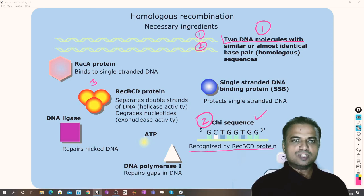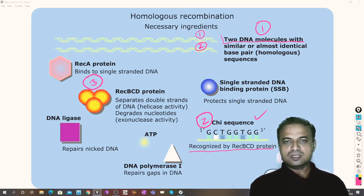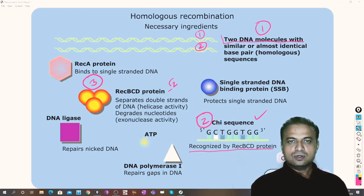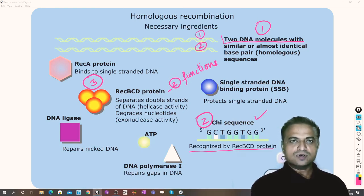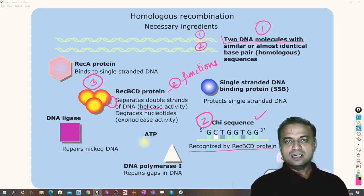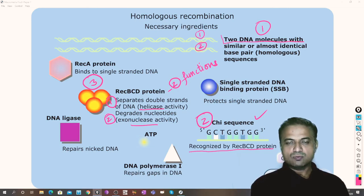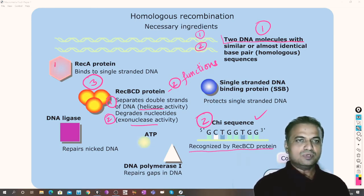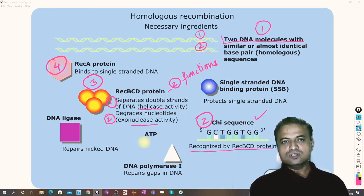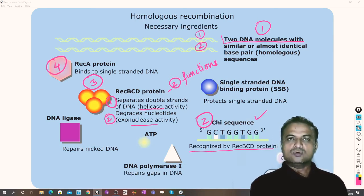The third requirement is the RecBCD protein, which separates the double-stranded DNA. It has two functions: first, separating the double-stranded DNA — that is helicase activity — and second, it degrades nucleotides — that is exonuclease activity. To protect the strand that is separated, the fourth requirement is RecA protein, which functions as a single-stranded binding protein, just like SSB proteins in DNA replication.